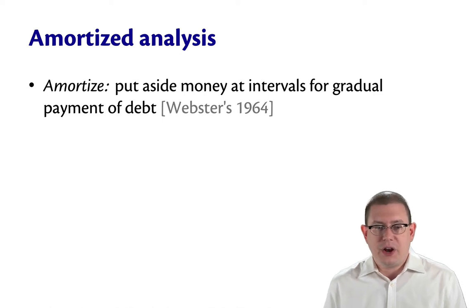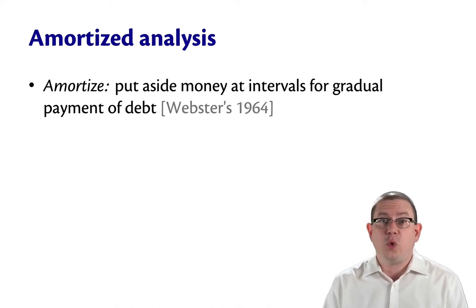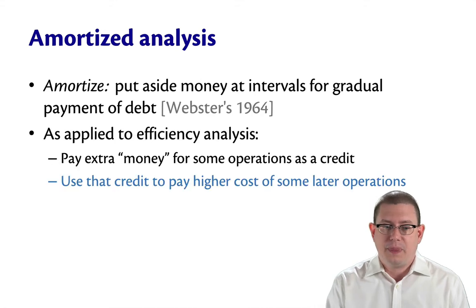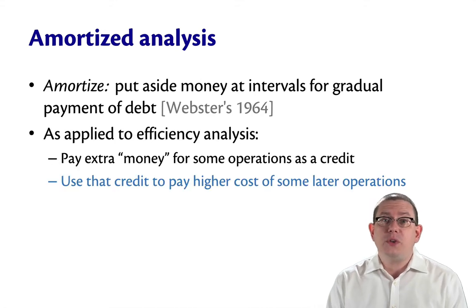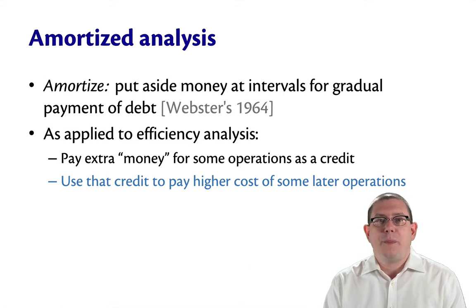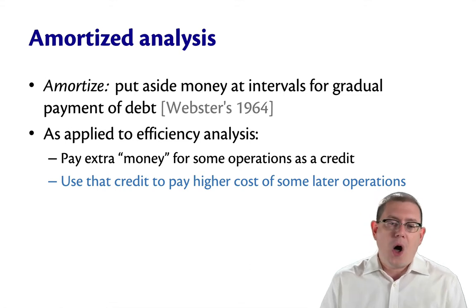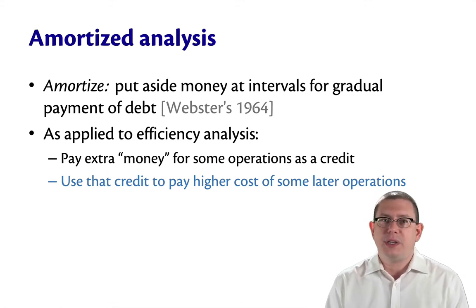Amortized, in the dictionary, is defined as putting aside money at intervals for gradual payment of debt. And that's what we're doing when we use amortization in efficiency analysis — we're paying some extra, what I'm calling money here, for operations.